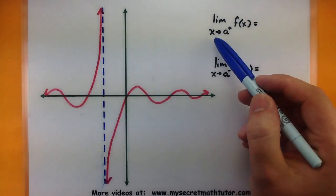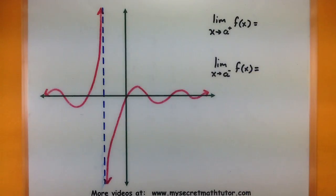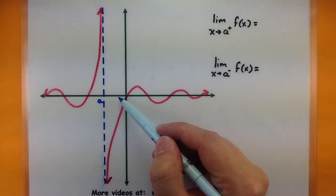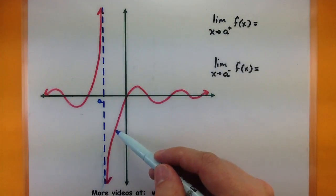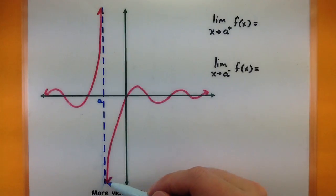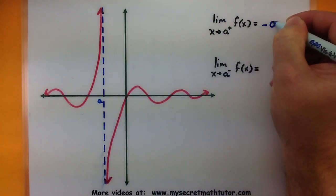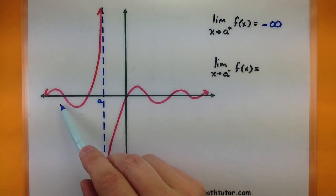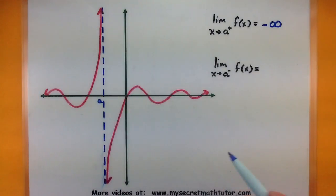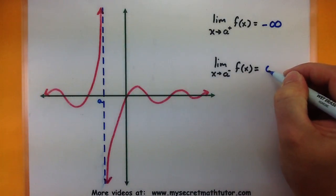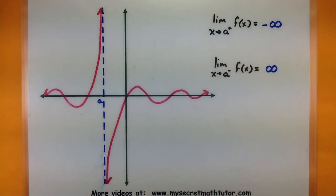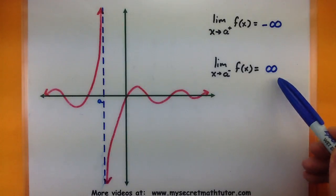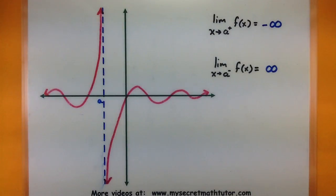Let's go ahead and do this first one. So the limit as x approaches A from the right side — I can see that the value of the function is just hugging really close to it, going towards negative infinity. If I approach that same value from the left side, now we're headed towards positive infinity. So this is one type of limit involving infinity where it doesn't key in on a specific value but just gets large or large and negative.